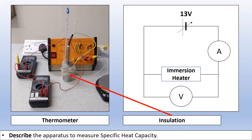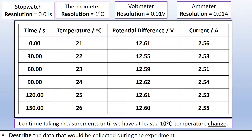Let's look at the results we would collect. We measure the temperature of the block at different periods of time — I went for every 30 seconds, as the change is going to be quite slow. In the table, with the stopwatch I was using having a resolution of 0.01 seconds, I'd expect all times to two decimal places. The thermometer resolution is to the nearest degree, so temperatures to the nearest degree. The voltmeter and ammeter both have resolution of 0.01, so two decimal places throughout. I kept collecting data until I had at least a 10 degree temperature change.